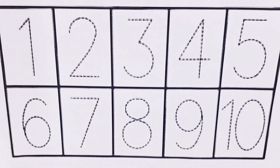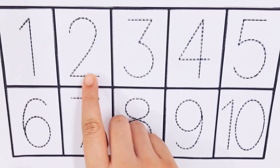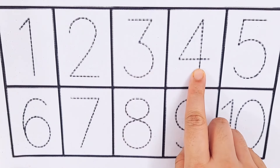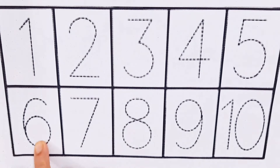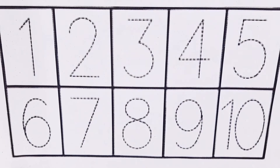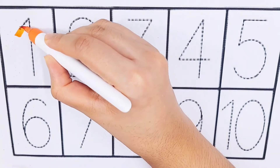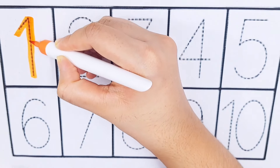Today we'll try to learn some numbers and colors. Number one, number two, number three, number four, number five, number six, number seven, number eight, number nine, number ten. Orange color, number two, number one.